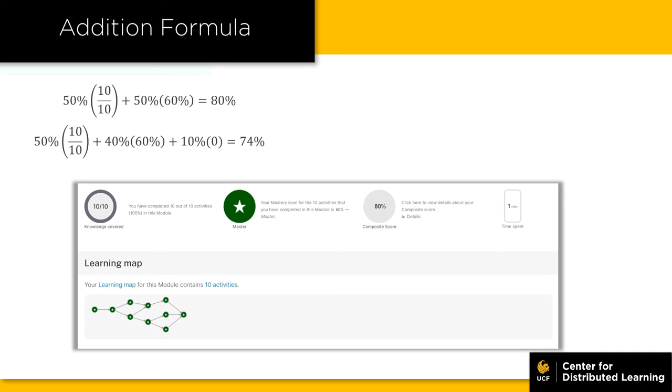Let's say you complete all the lesson nodes in a module, so your knowledge covered would be 10 out of 10 nodes, or 100%. The system calculates your knowledge state as 60%. Since you have not practiced or revised any lesson nodes yet, your effort points equal zero. From the two formulas, a score of 80% is the highest, so the system will keep your score of 80%.